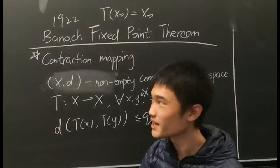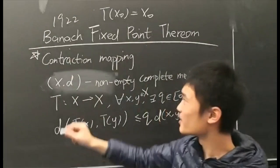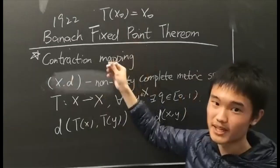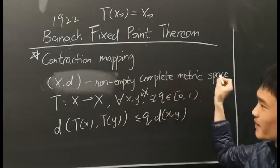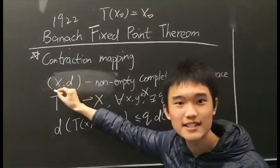Now we are going to introduce a very important definition about contraction mapping, because this theorem is based on this mapping. Here we have a non-empty complete metric space (X, d). What is a complete metric space? It means that all the Cauchy sequences in X have a limit that is also in X. In other words, all the Cauchy sequences in X converge in X.